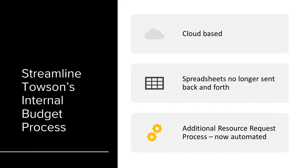Budget planning will also streamline Towson's internal budget process at a divisional level. Capturing our budget process in the cloud removes the need for many spreadsheets to be sent back and forth, eliminating errors where wrong files can be picked up or lines can be missed. The additional resource request process will also be automated, allowing for easier tracking and reporting by combining all requests into one main area for review and approval.